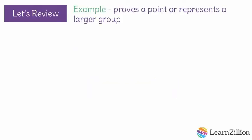An example is something that proves a point or represents a larger group. Writers use examples to help their readers understand what they're talking about. If you were trying to inform your reader about how camouflage helps predators to hunt their prey, you would want to give lots of details and facts about this topic, like this.